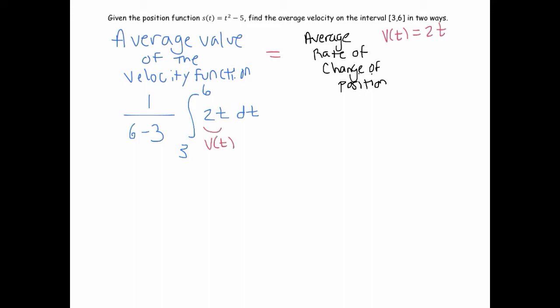That's going to equal the average rate of change of position, which is s(6) minus s(3) divided by 6 minus 3. I'm not even so interested in the answer — what I'm interested in is this relationship. Notice that the (1 over 6 minus 3) factors are going to cancel.